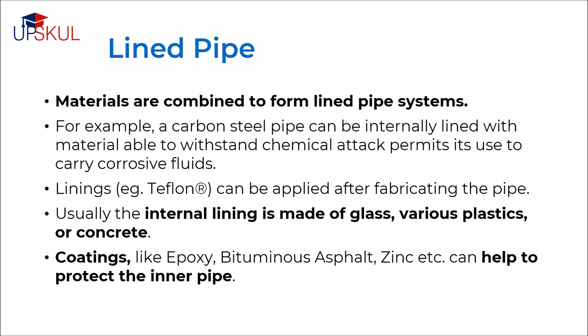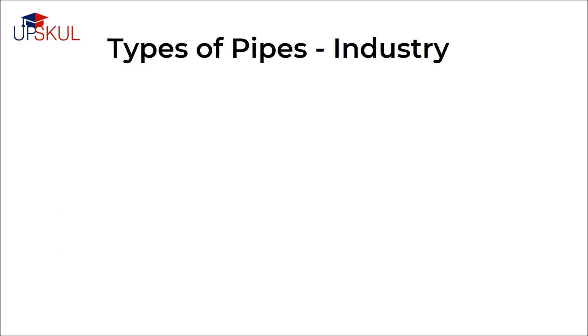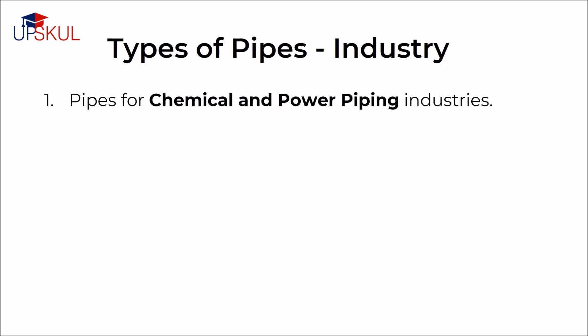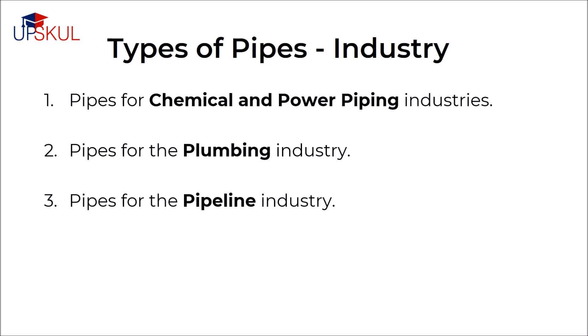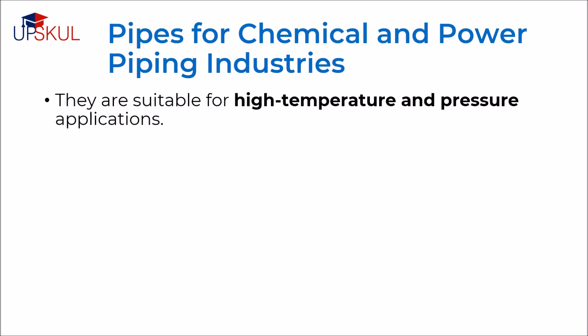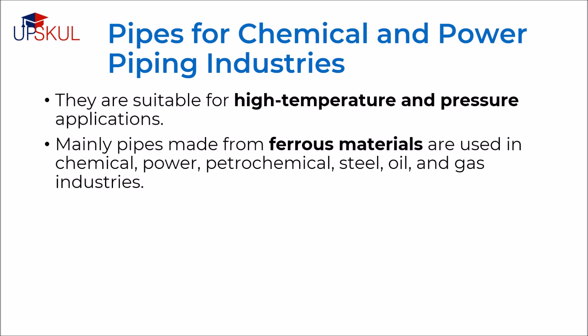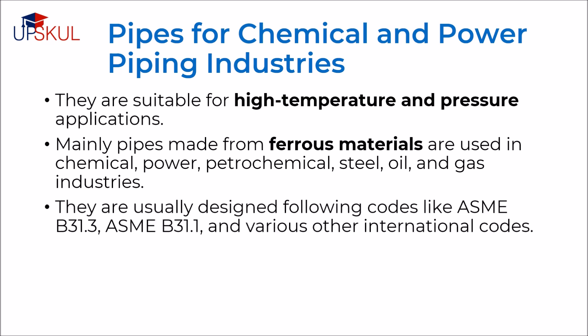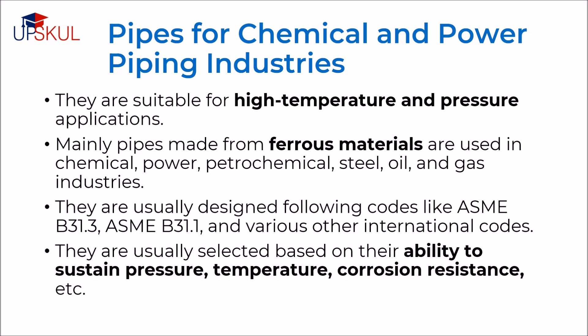Depending on the type of industry, there are three types of pipes: pipes for chemical and power piping industries, pipes for plumbing industries, and pipes for pipeline industries. The types of pipes for chemical and power piping industries are suitable for high temperature and pressure applications. Mainly pipes from ferrous metals are used in chemical, power, petrochemical, steel, oil and gas industries. They are usually designed following codes like ASME B31.3 and ASME B31.1 and various other international codes. They are usually selected based on their ability to sustain pressure, temperature, corrosion resistance, etc.